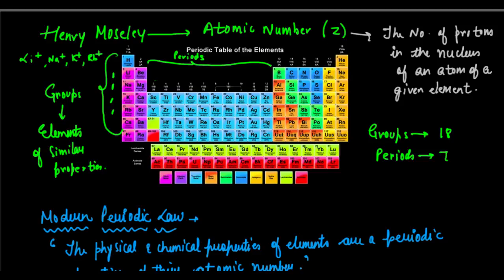Next, he classified elements on the basis of atomic number and grouped them in such a way that elements in a period had the same number of shells in their electronic configuration. Let me take the second period as an example.